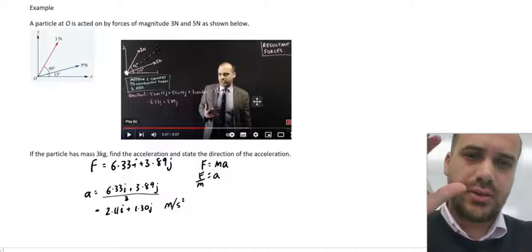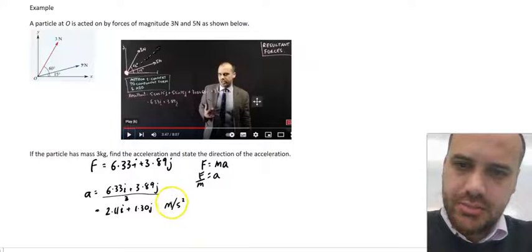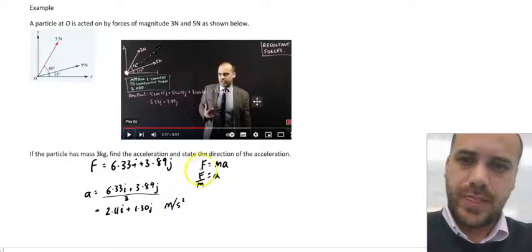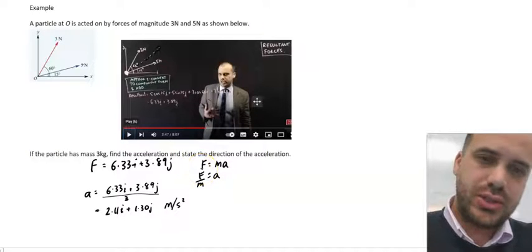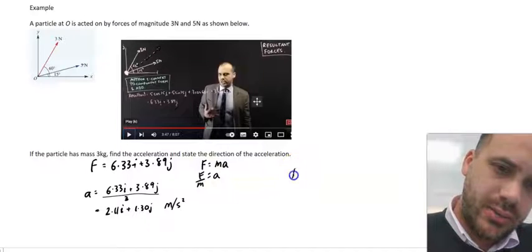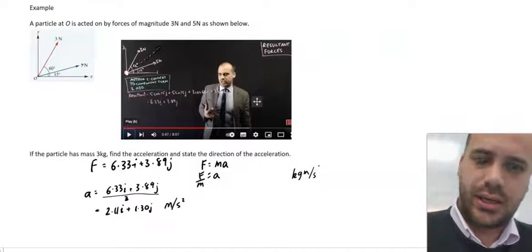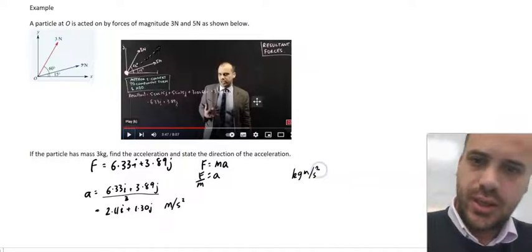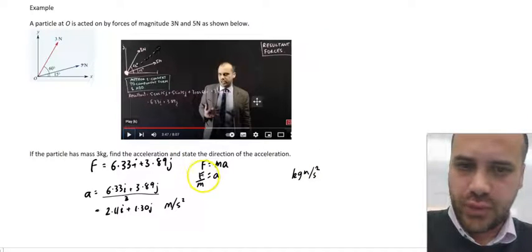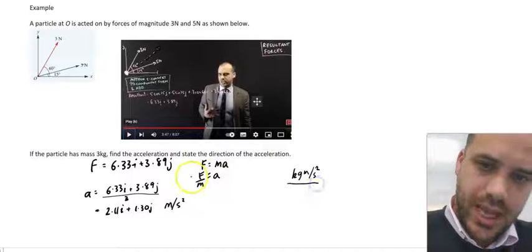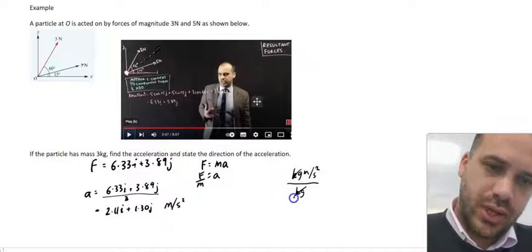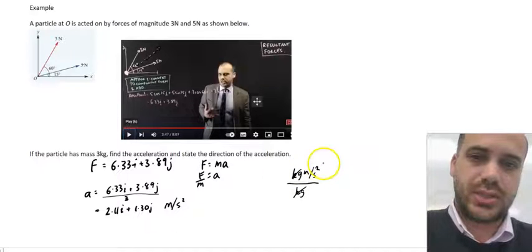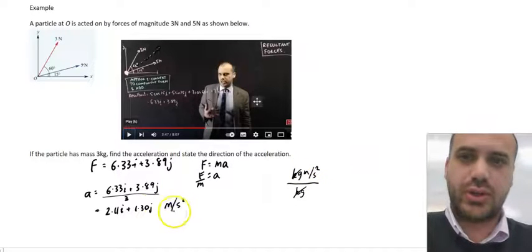Now, it's worth mentioning here that the reason it's meters per second squared is that force was measured in newtons, and newtons are kilogram meters per second squared. And we're dividing force by mass in kilograms. So when we do that, we're going to get a new unit of meters per second squared.